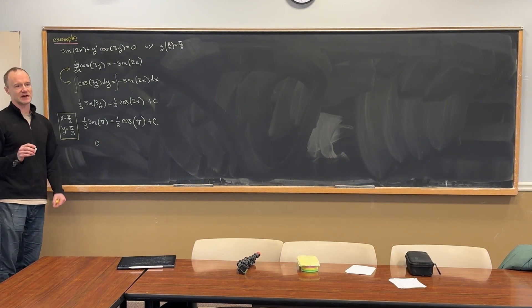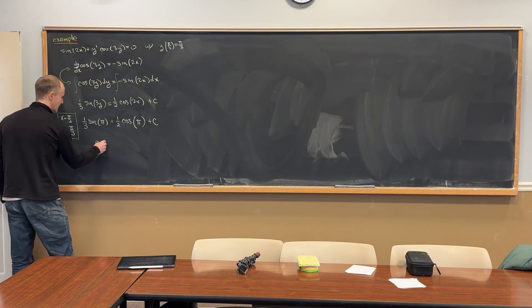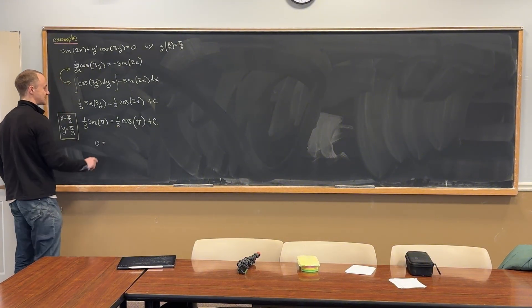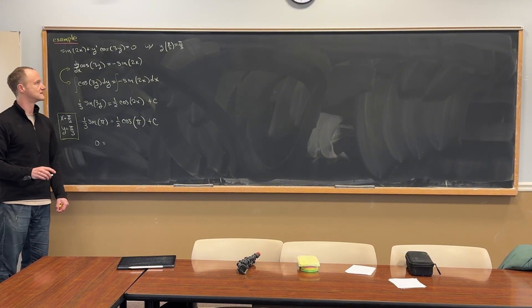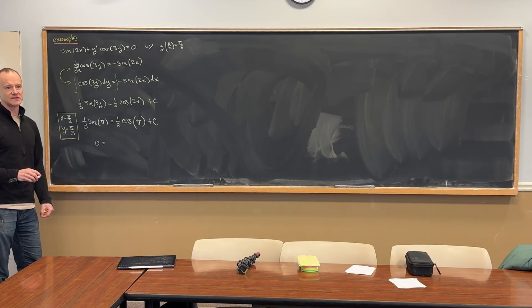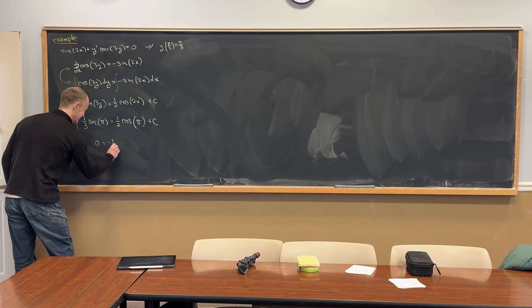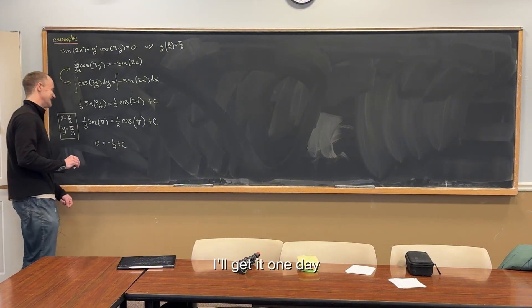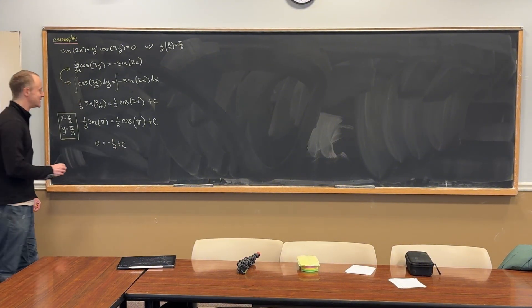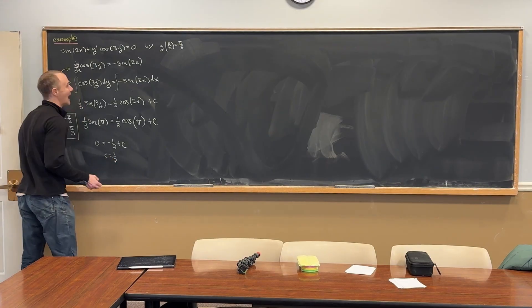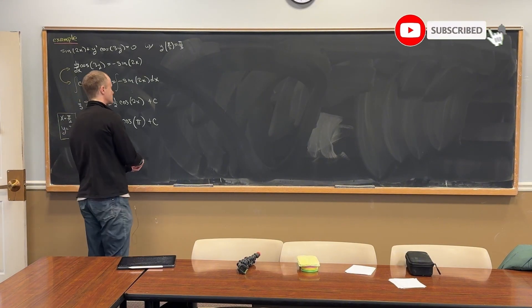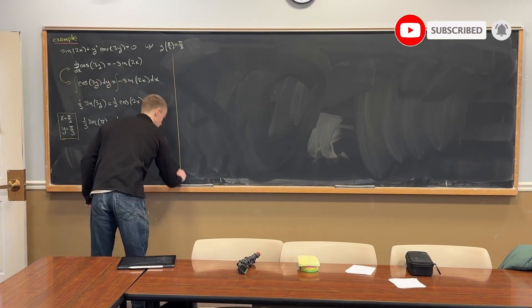Sine of any whole number times pi is zero. And then this is going to be a half times, what's the cosine of pi? Negative one. Yeah, so that means c is a half.